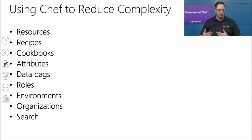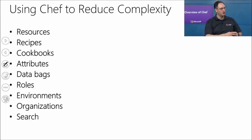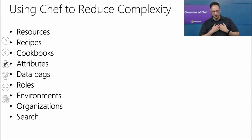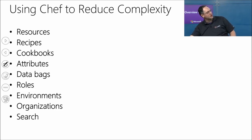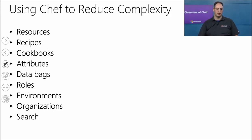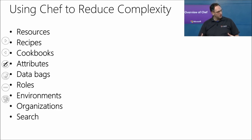Then we have environments. One of the common scenarios is I have my dev, my QA, my staging or UAT, and my production. You can also use environments for my internal production versus my Azure production, my internal testing versus Azure staging. An environment allows us to constrain what version of cookbooks are available there, as well as to specify some run lists and some attributes. We can basically package some data around environments.